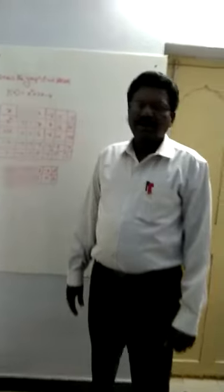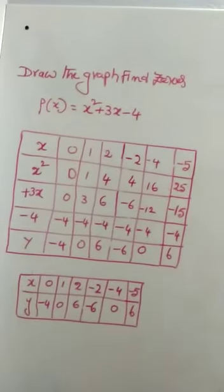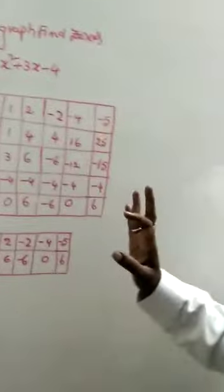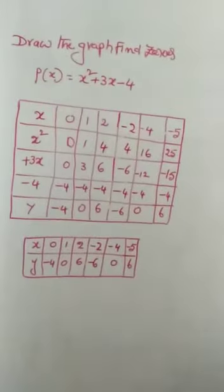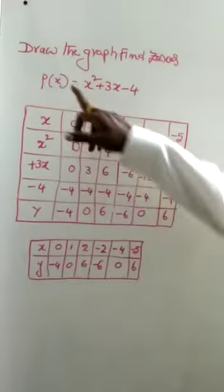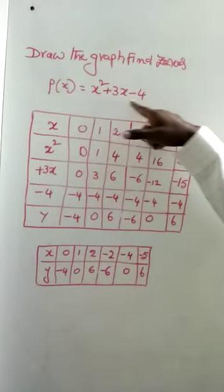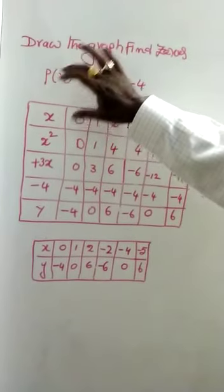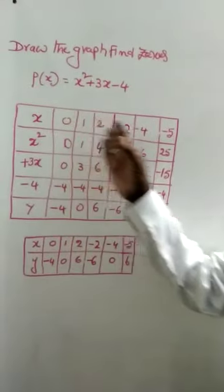Good morning students. Today we are going to discuss how to draw the graph and find the zeros — one more example today. Now we are going to discuss this problem: draw the graph and find the zeros. P of x is equal to x squared plus 3x minus 4. This equation gives us the graph of zeros, so we find the zeros from a table.